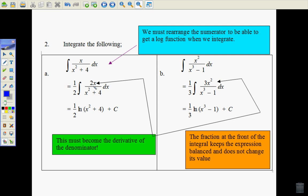So half times 2 gives us just x. So we're back to the situation where we can integrate the function and get back to natural log of x squared plus 4, but we have the half out the front.